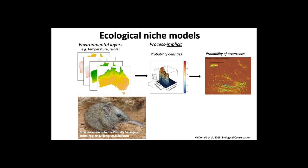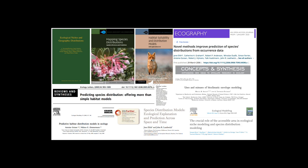They typically achieve this through identification of statistical relationships between species observations and environmental descriptors, such as shown in this recent study with the critically endangered central rock rat from Australia that included climatic variables and topographic features. However, more mechanistic modeling approaches, as well as approaches involving expert opinion, also exist. A wealth of papers and books discuss ecological niche modeling, including some shown on this slide.